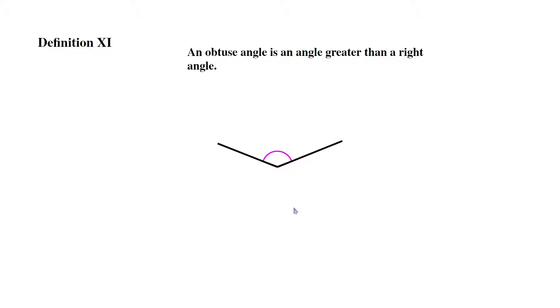Now definition 11. An obtuse angle is an angle greater than a right angle. So we all know that a right angle is a 90 degree angle, while an obtuse angle is an angle greater than a 90 degree angle. So anything 100 degree angle, 180, 270, all those are valid obtuse angles.